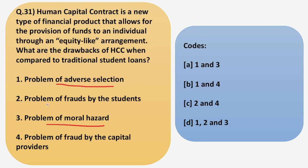Also there is the problem of frauds by students, but this is not actually a drawback because the contract specifies that at a pre-specified rate for a pre-specified time a certain portion of the student's future income will be the payout, and if the student has started earning he must pay it. There is also the problem of fraud by capital providers, but this is also not a key drawback of HCC. So the two main drawbacks are adverse selection and moral hazard.